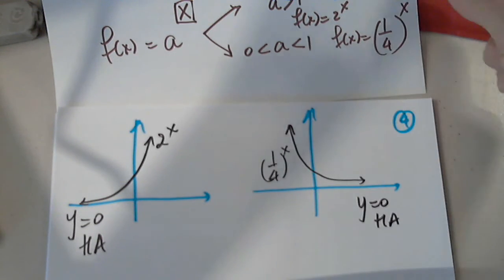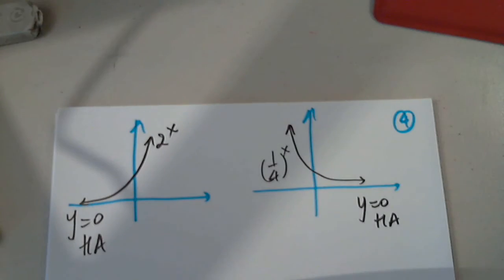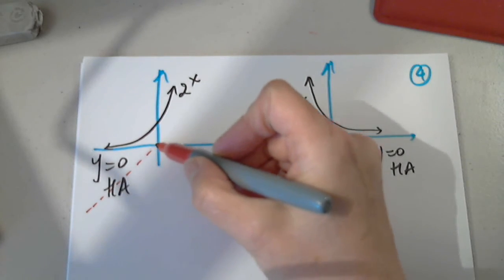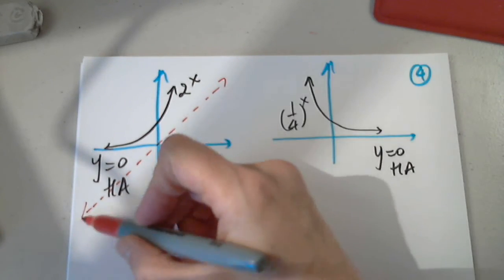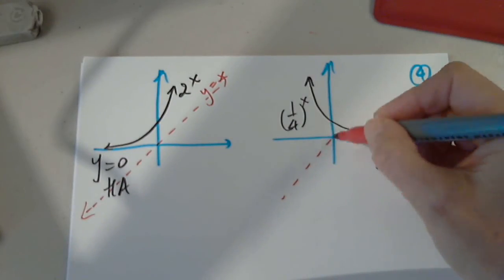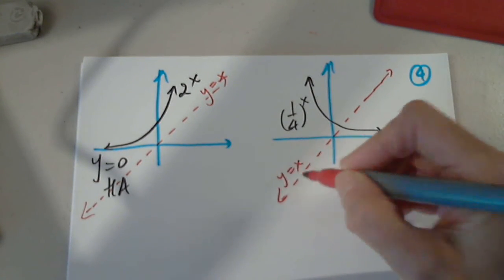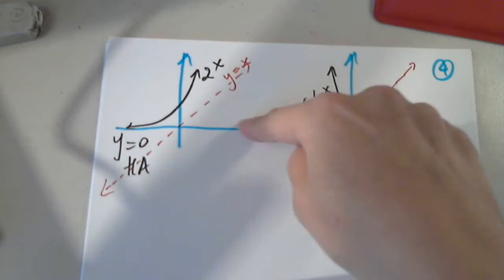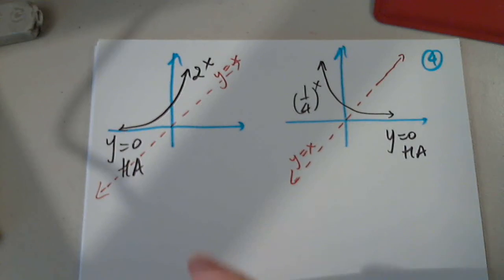Any questions so far on exponential functions? We do have the inverse function, which is the log function. I'm going to put the graphs together. If we graph a function and its inverse, the line y equals x bisects the first and third quadrants. These functions are one-to-one by the horizontal line test — for each y value there is only one x value. Because they are one-to-one, they have inverses.